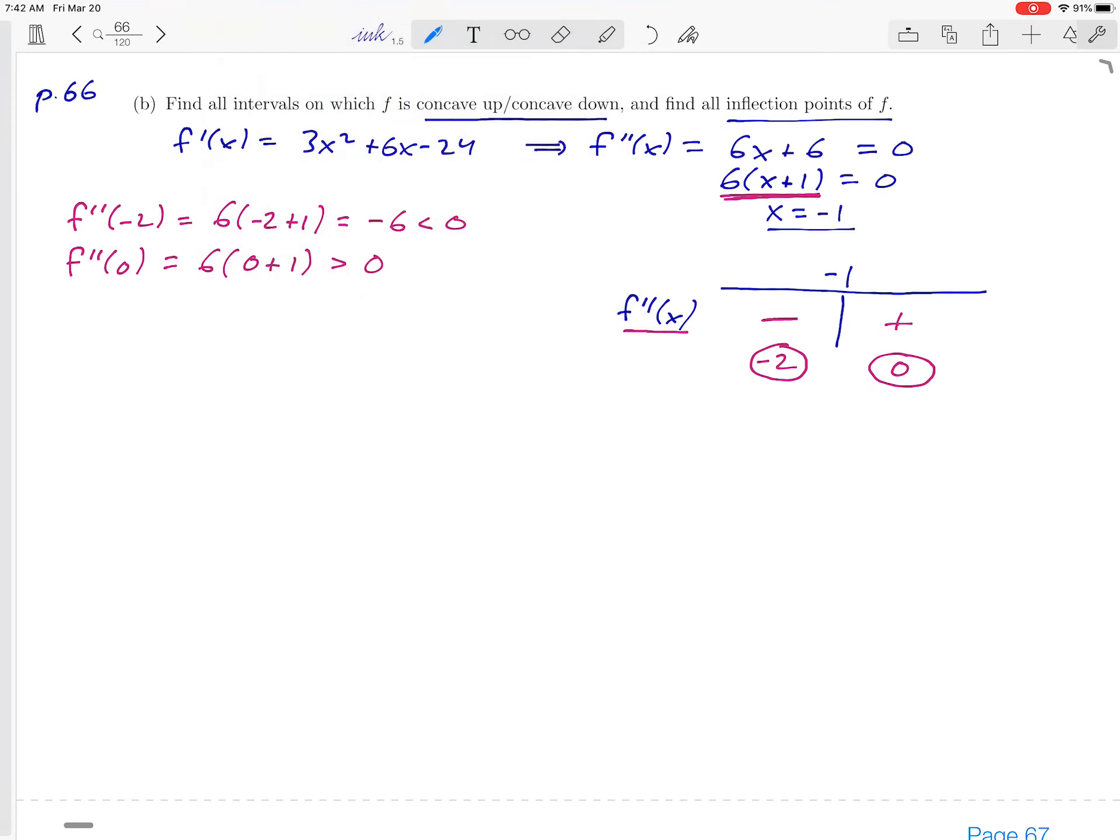Well, a negative second derivative—this negative sign that I'm circling—tells us that our function is concave down. So f is going to be concave down everywhere to the left of -1. If we write that as an interval, it's all x values between negative infinity and -1.